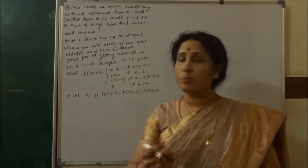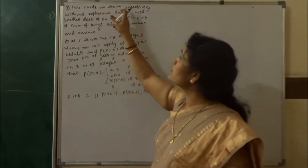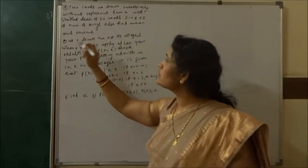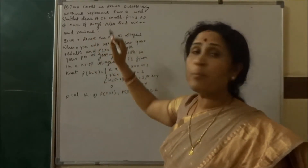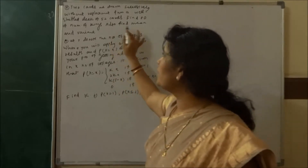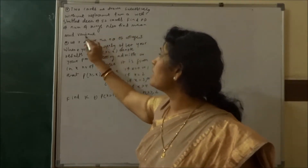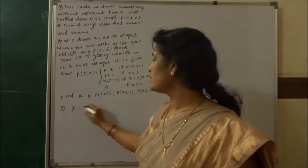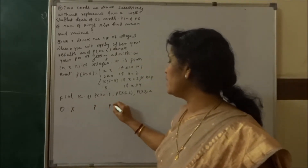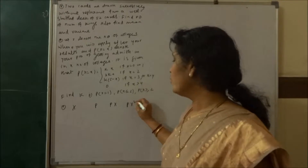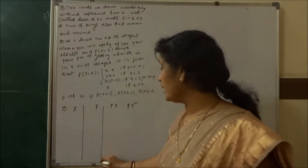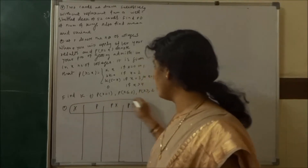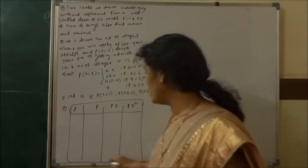Two cards are drawn successively without replacement from 52 cards. Find the probability distribution of the number of Kings, and also find the mean, variance, and standard deviation. We set up a table with columns x, p, px, and px². There are two cards drawn, so we have zero success, one success, and two success.